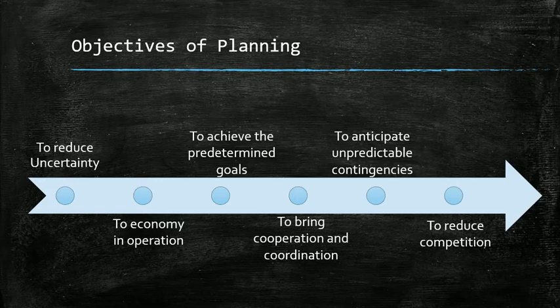The second important objective of your planning system should be to bring cooperation into your organization. This starts with economic operation — working on economically sound projects. Resources are not abundant, so you need to maximize their utilization. You have to plan in advance where you will get these resources, how production or delivery will work, and design it in a way that reduces waste.